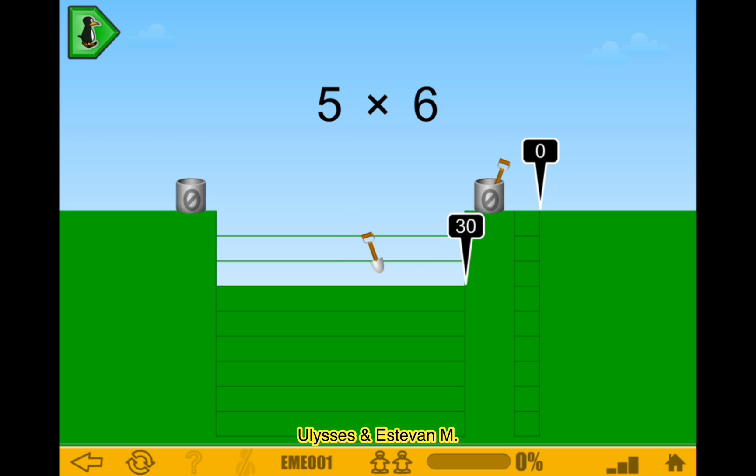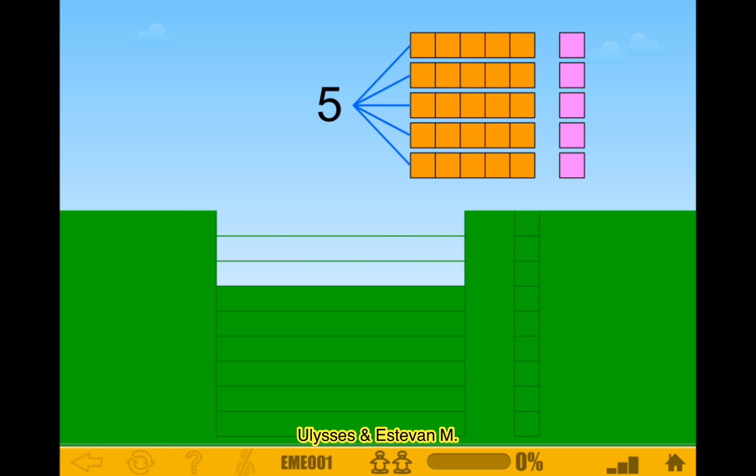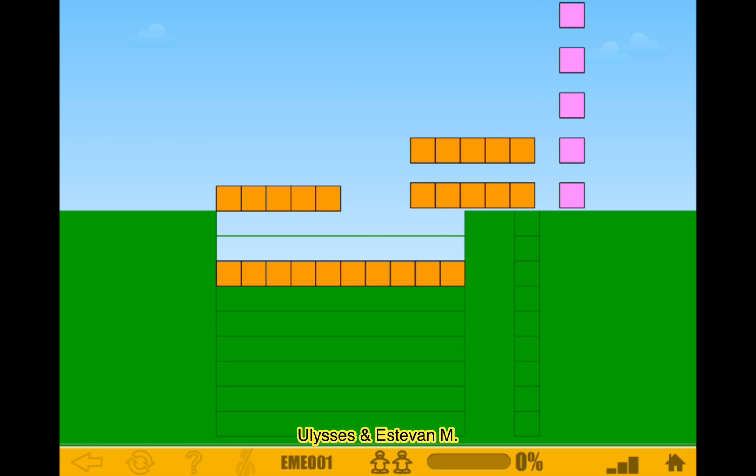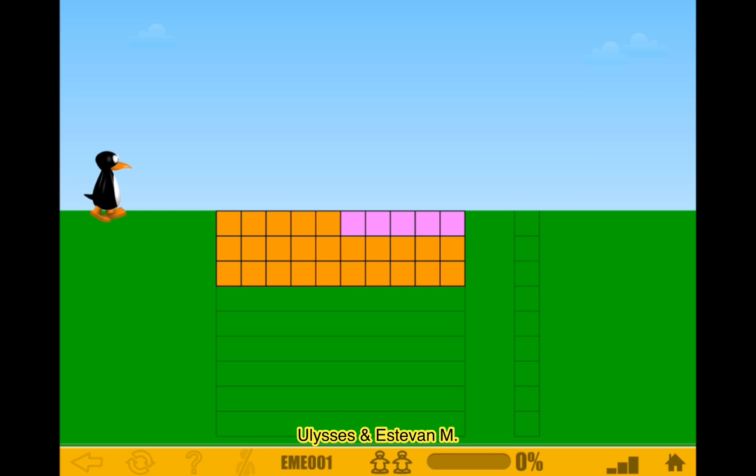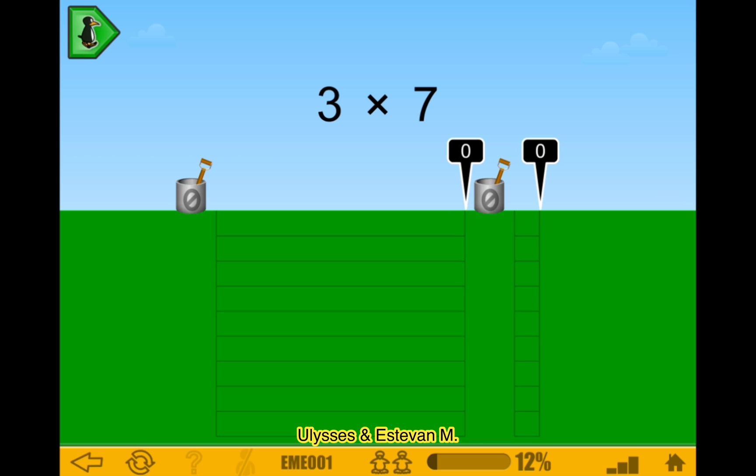I think there's one more level though. Oh, there's two more levels. Okay, Level 3. 5 times 6 is 30. Easy. Wait, what? Why is there 1s? Oh, never mind. I don't know why there was 1s in the beginning. Okay, 7 times 3 is 21.